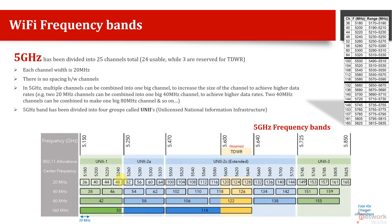So in an interview, if you are asked how many frequency channels we have in 5 GHz, the first answer should be 24. But you should remember there are actually 25 total — 3 out of these are further reserved in some countries, called TDWR, which are usually for radar and similar communications.